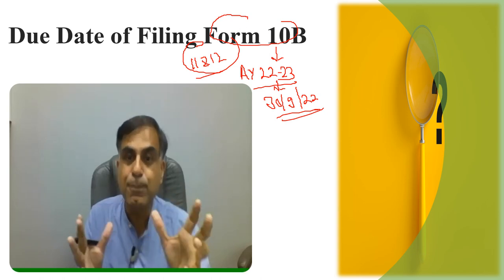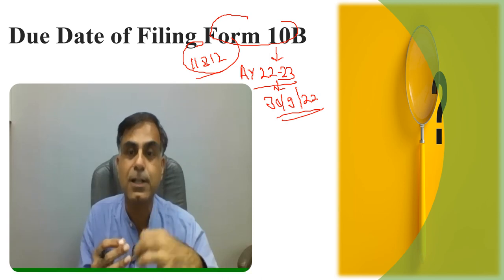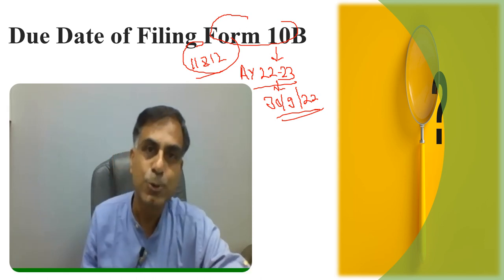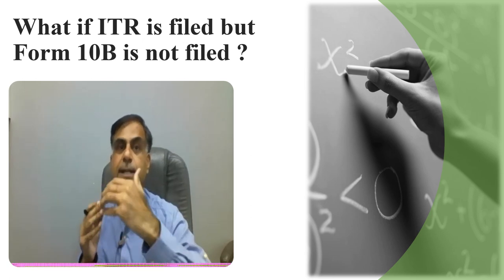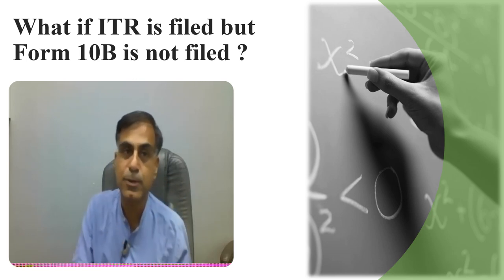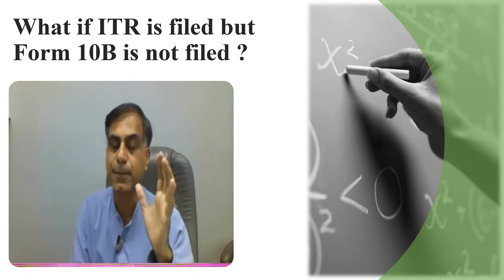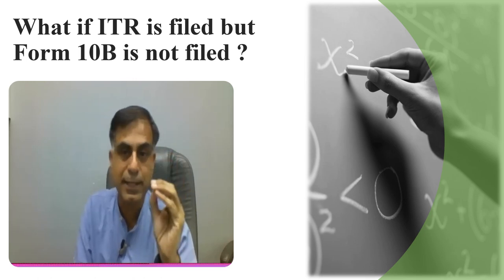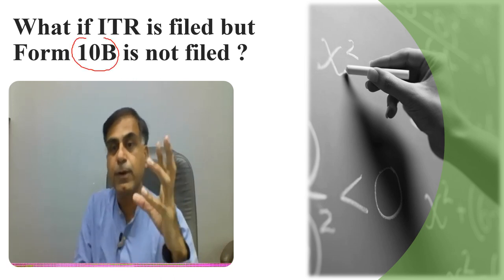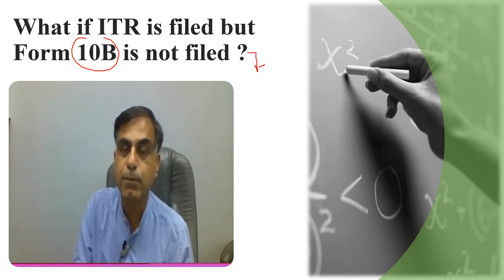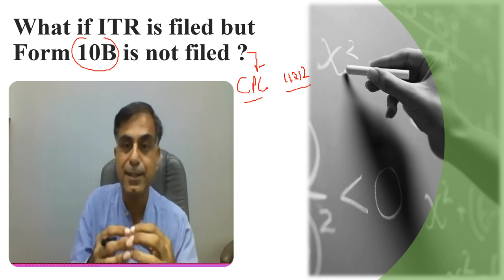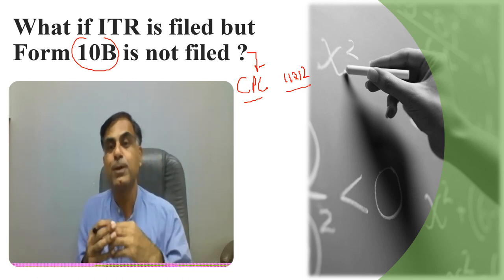This is not a simple consequence — it is a very dangerous consequence for a charitable or religious trust. How would you pay tax when you have already spent on charity? One has to be cautious — this is the message I am trying to give through this video. What if the ITR is filed but Form 10B is not filed? Merely filing an ITR is not sufficient. If you are covered under section 12A subsection 1 clause B as a charitable or religious institution, it is mandatory that Form 10B is also filed. Even if you have filed the ITR, the department will process your return without giving the benefit of section 11 and 12.